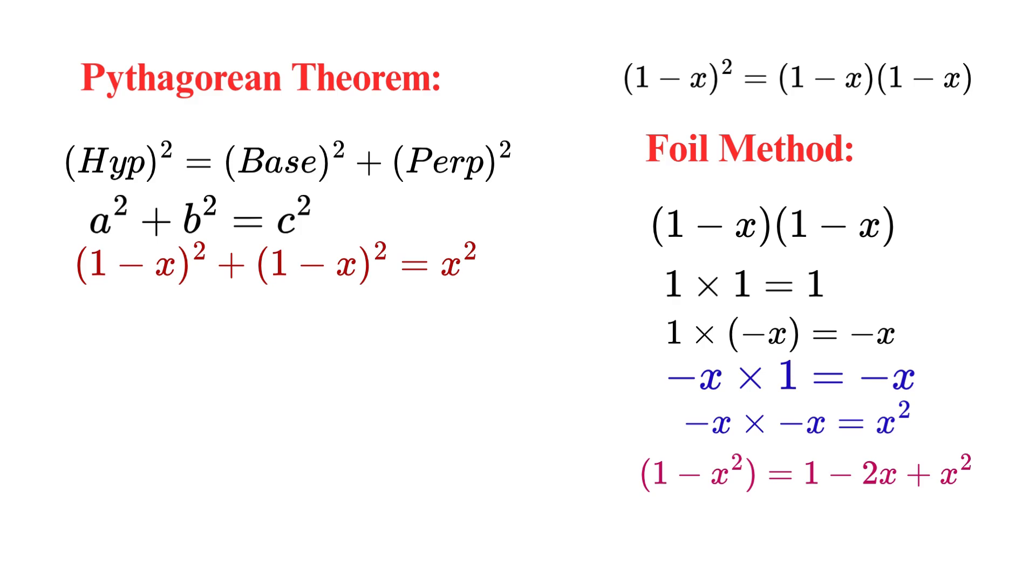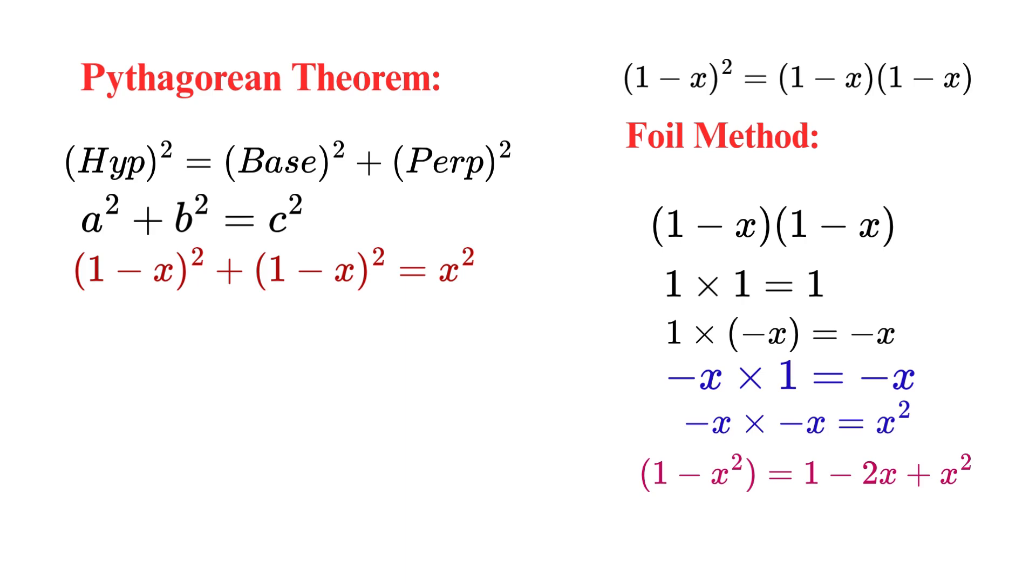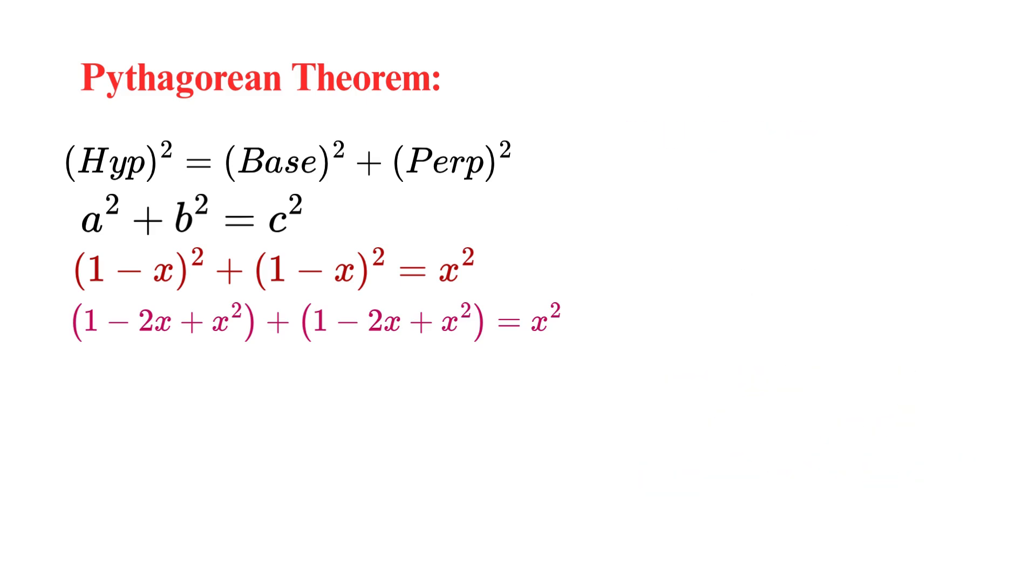Great. But remember, on the left side of our original equation, we have (1 - x)² appearing twice, so we need to add this result to itself. (1 - 2x + x²) + (1 - 2x + x²) = x². Perfect. We're ready to simplify this further. Now, we need to combine the like terms on the left side. Let me show you how we organize this. We're going to group the terms that are similar, like the x² terms, the x terms, and the constant numbers. Let's start with the x² terms. We have x² plus x², which gives us 2x².